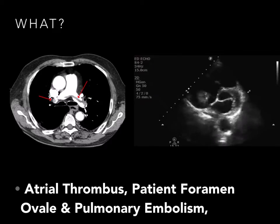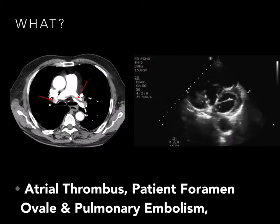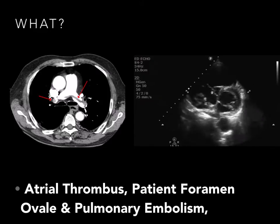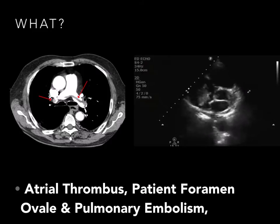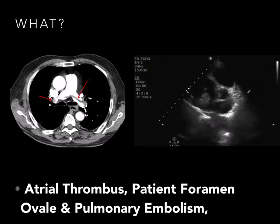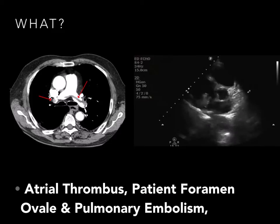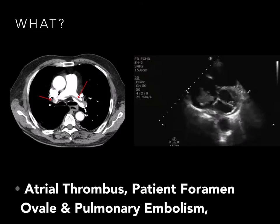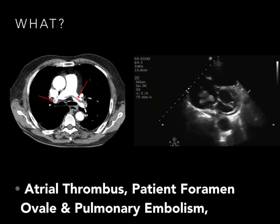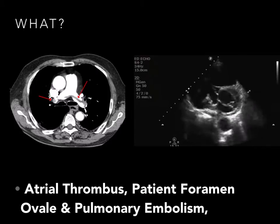Clot in the right heart can be seen in patients with pulmonary embolus. A pulmonary embolus starts as a deep venous thrombus, which then travels through the IVC and the right heart, finally lodging in the pulmonary arteries. Drs. Khan and Wallace also use ultrasound to demonstrate right heart strain and the cardinal signs of PE.